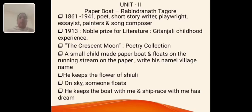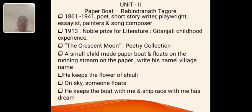Unit 2, the poem Paper Boat by Rabindranath Tagore. He was born in the year 1861 and died 1941. He is a versatile person — a poet, short story writer, playwright, essayist, painter, and song composer. He received the Nobel Prize in 1913 for his work Gitanjali. In the poem Paper Boat, he shared his childhood experience. This poem is taken from the poetry collection Crescent Moon. The narrator is a small child who puts paper boats on the stream, writes his name and village name on them, and places a shefali flower on top, reminiscing over it.